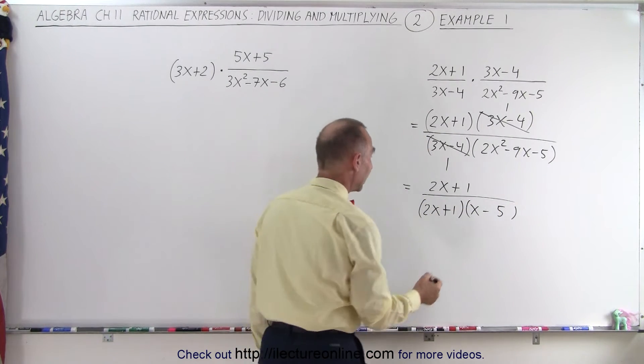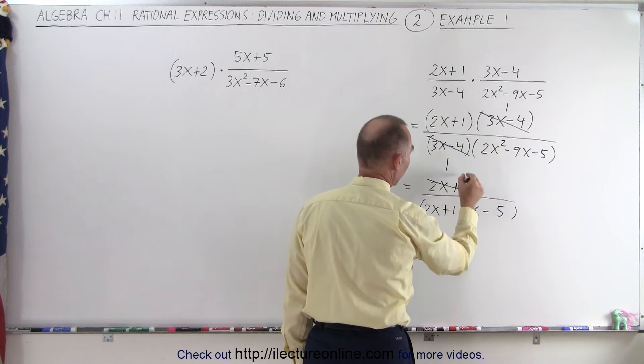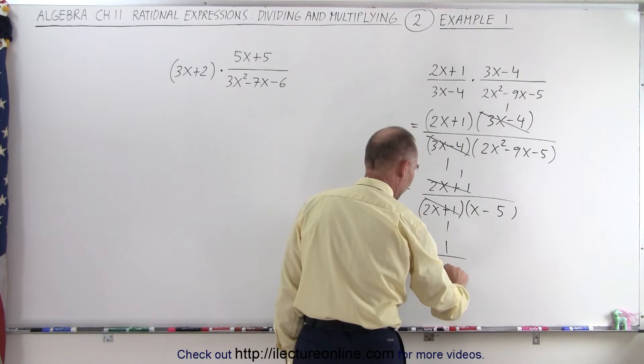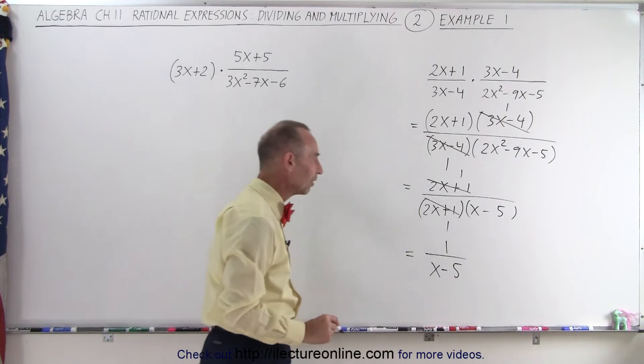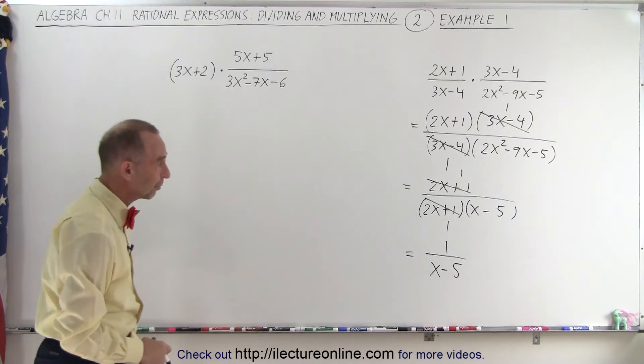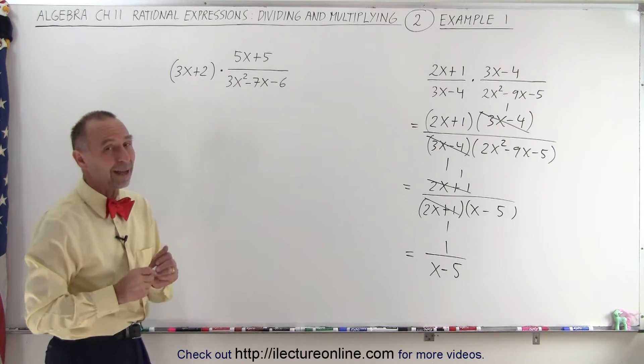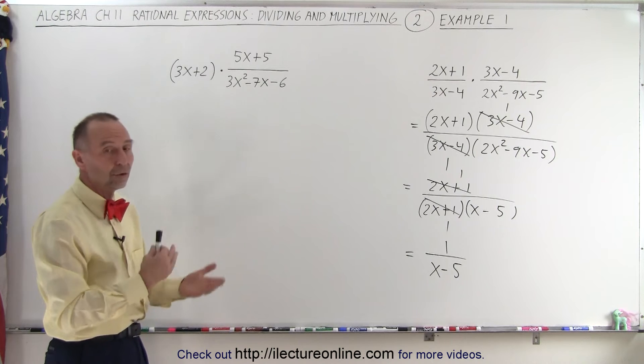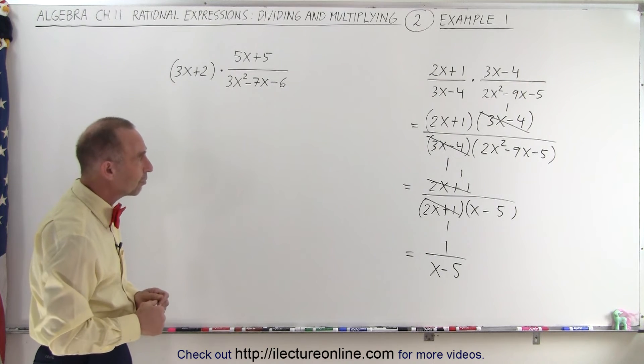Now we notice we can again simplify some things. 2x plus 1 and 2x plus 1 simplifies, so this can now be written as 1 over x minus 5 as the final simplified result. And that's typically what these types of problems look like. You probably need to do some factoring, and then some regrouping, and then some simplification.